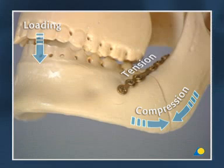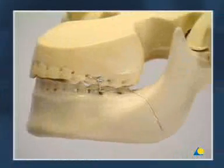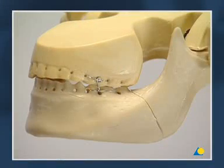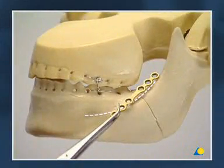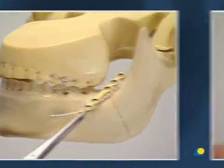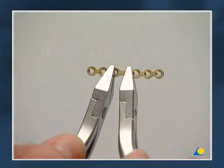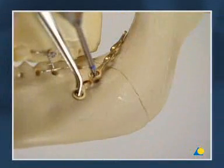Here are the main steps once again: reduction of the fracture and MMF with Ernst ligatures; adaptation of the 6-hole 2.0 mandible mini plate; adaptation of the plate and fixation of the plate to the oblique ridge.